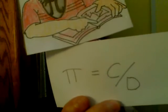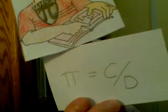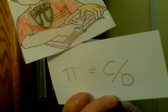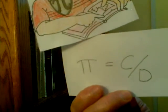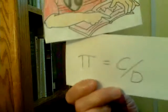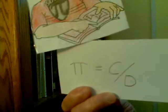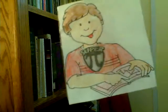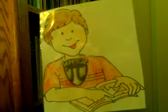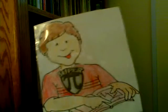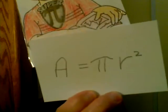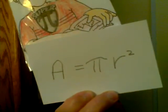Pi is the ratio of the circumference to the diameter, so mathematically pi equals C over D. Pi is important because it is used in a lot of important formulas. For example, the area of a circle is A equals pi r squared.